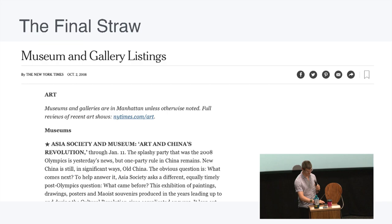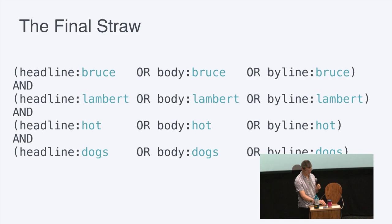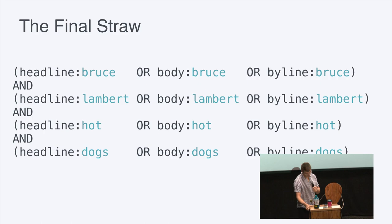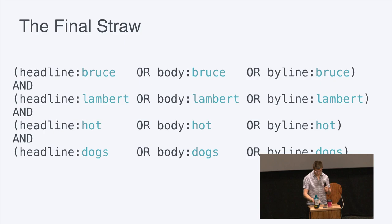I realized if I was going to fix this, I had to learn about search. Looking at the query string query for 'Bruce Lambert hot dogs,' the query is looking for Bruce in the headline, body, or byline, then Lambert in the headline, body, or byline, and so on. This isn't exactly intuitive if you're not familiar with how this query works.